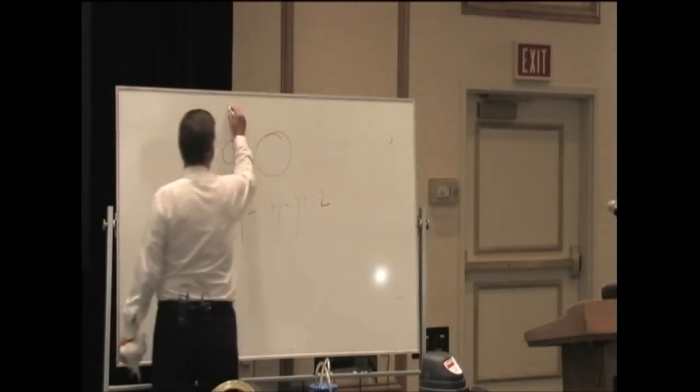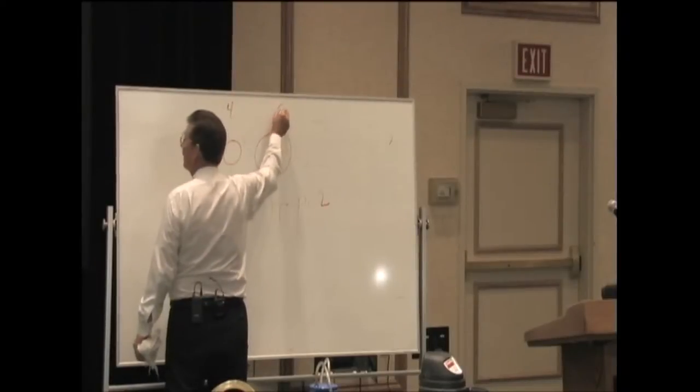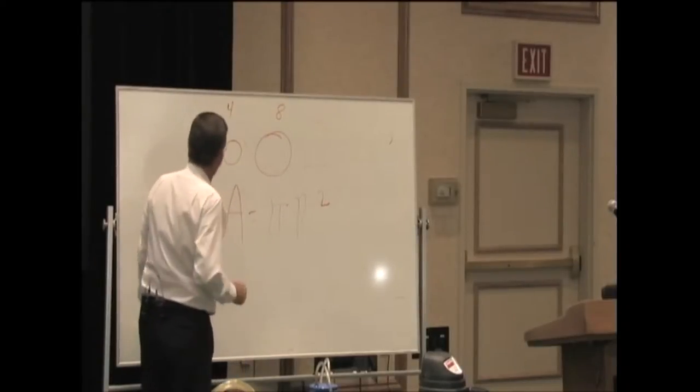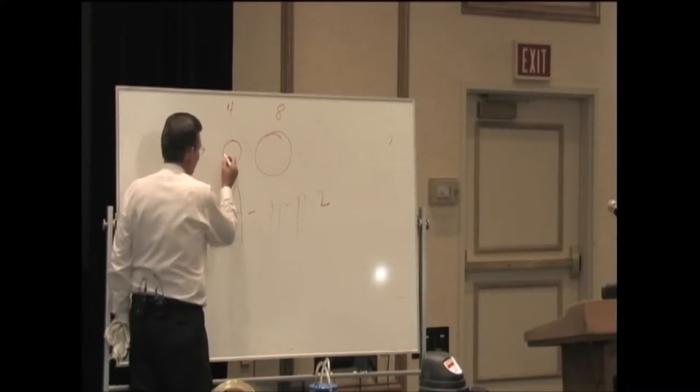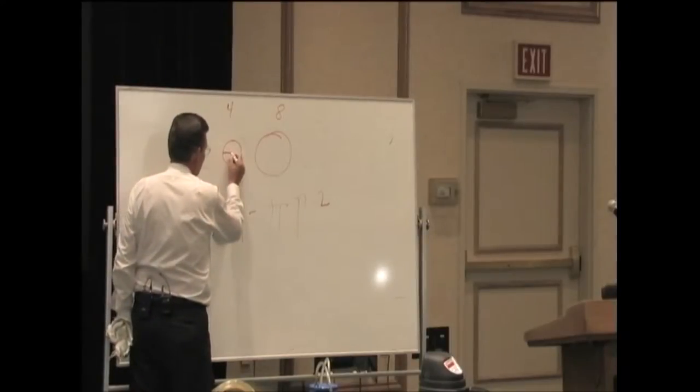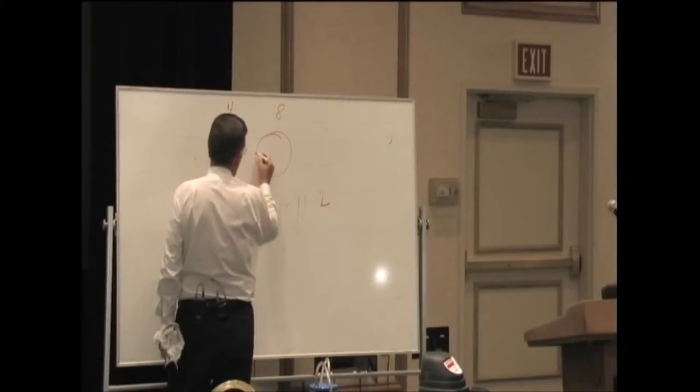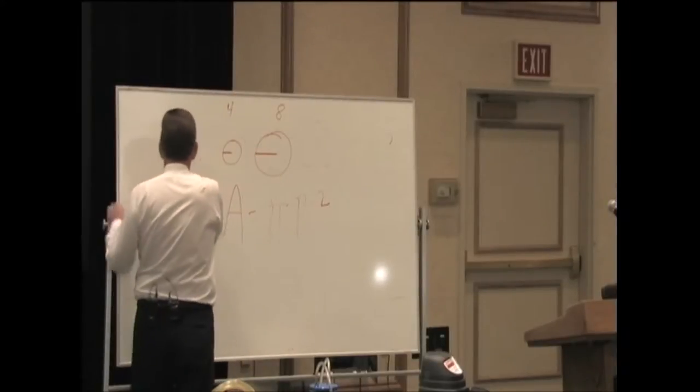So this is a four-inch, this is an eight-inch. Let's just do this over here first. Area equals pi r squared. The radius, that's four and then it's two. The radius is four. So let's do this over here first.